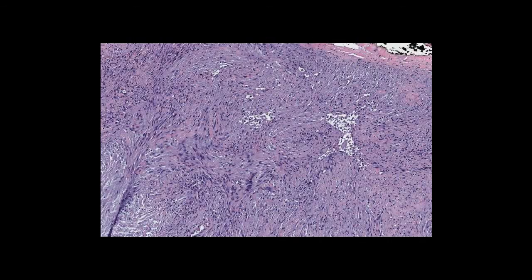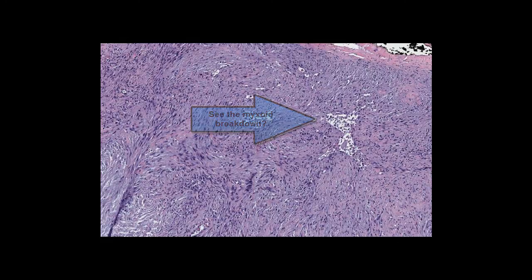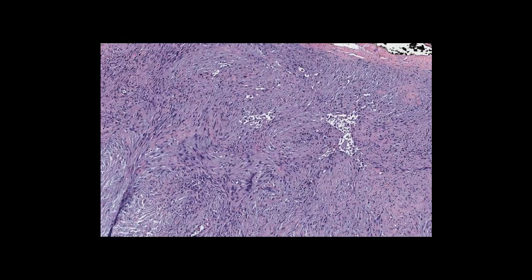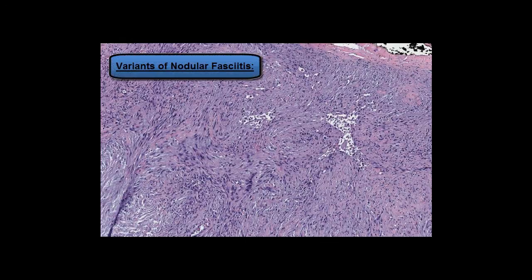In summary, nodular fasciitis is one of the more important soft tissue lesions for pathologists to be very familiar with. Because it is relatively common, and in some cases very cellular, grows rapidly, and has abundant mitoses, it can easily be mistaken for a sarcoma. Other entities with which it may be confused are myxoma, fibrous histiocytoma, or fibromatosis. There are also several variants of nodular fasciitis worth being aware of.